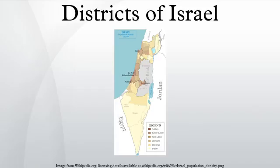Central district: population 1,976,300; district capital: Ramla. Sub-districts — Sharon: population 435,200; Petah Tikva: population 668,700; Ramla: population 319,800; Rehovot: population 552,600.